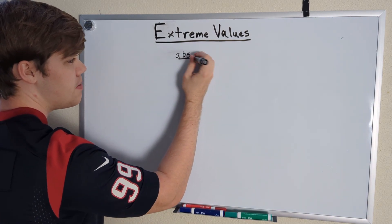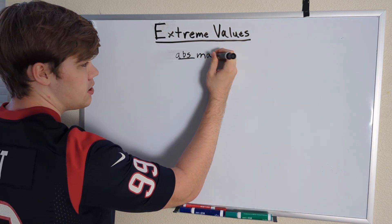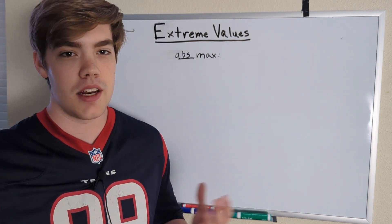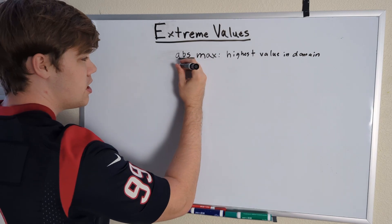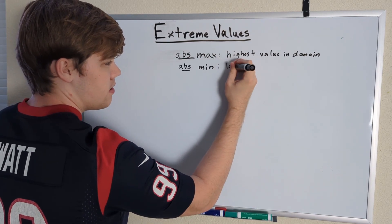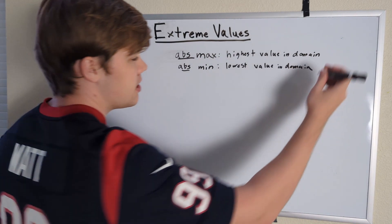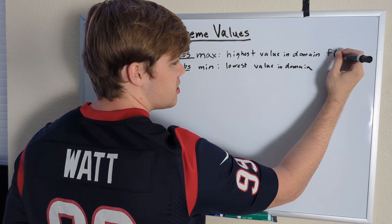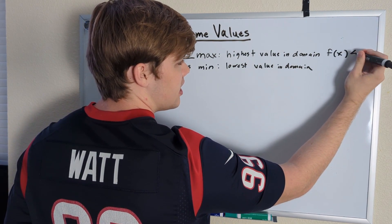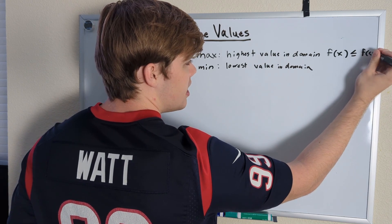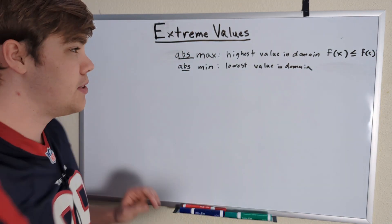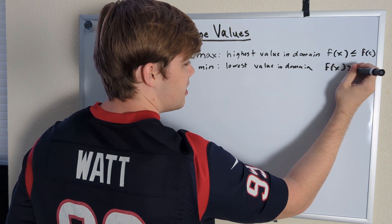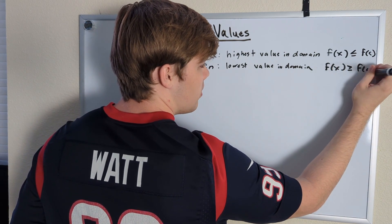The absolute maximum is the highest y-value within the domain of the function. Similarly, the absolute minimum is the lowest value in the domain. These two can also be notated mathematically. For an absolute maximum, f(x) is less than or equal to f(c) at every point. And similarly, the absolute minimum is when f(x) is greater than or equal to f(c) at every point.